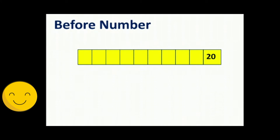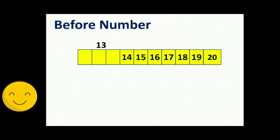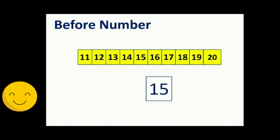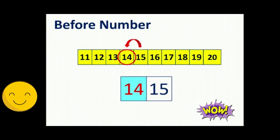Look at the numbers: 20, 19, 18, 17, 16, 15, 14, 13, 12, 11. Look at the numbers 11 to 20. What comes before 15? 15 before — 20, 19, 18, 17, 16, 15 before — 14. Very good.